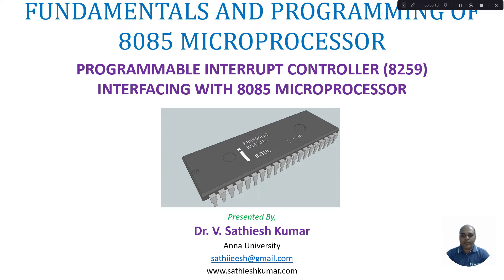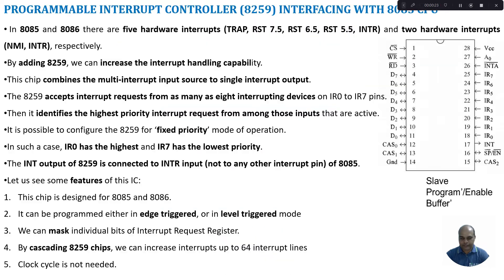The Programmable Interrupt Controller IC number is 8259. In 8085 and 8086, we have 5 hardware interrupts and 2 hardware interrupts respectively. In 8085, the 5 hardware interrupts are TRAP, RST 7.5, 6.5, 5.5, and INTR.